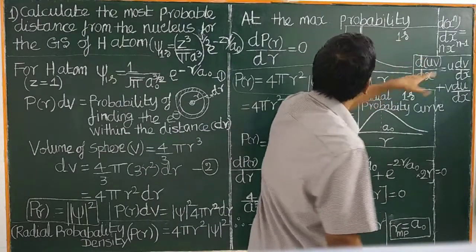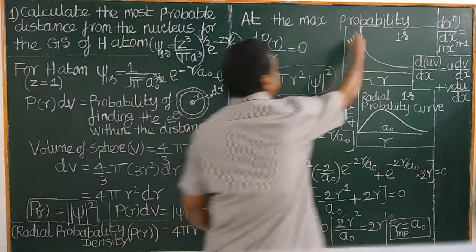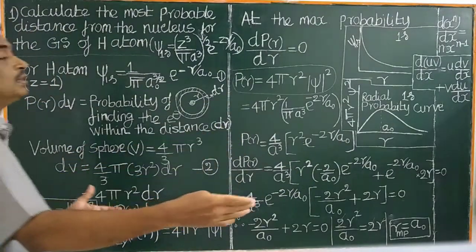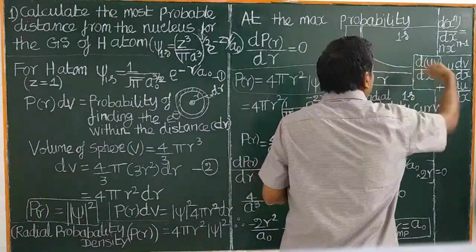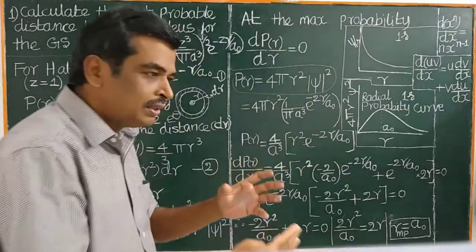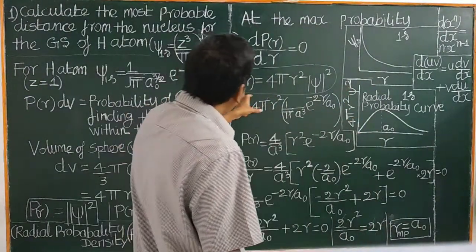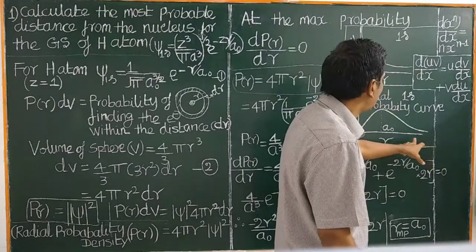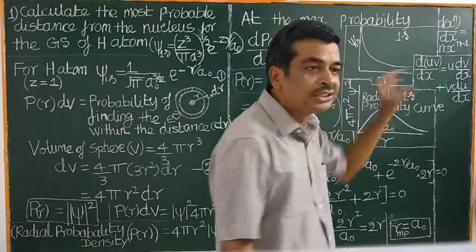Applying this to the 1s orbital: the wave function is an exponential function with a negative sign. Therefore, it decreases exponentially with distance. As the distance increases, the electron is less likely to be found. At large distances, the electron is essentially not present because the 1s electron is close to the nucleus. Let us now plot the radial probability density function versus distance. This curve is called the radial probability curve or radial distribution curve.